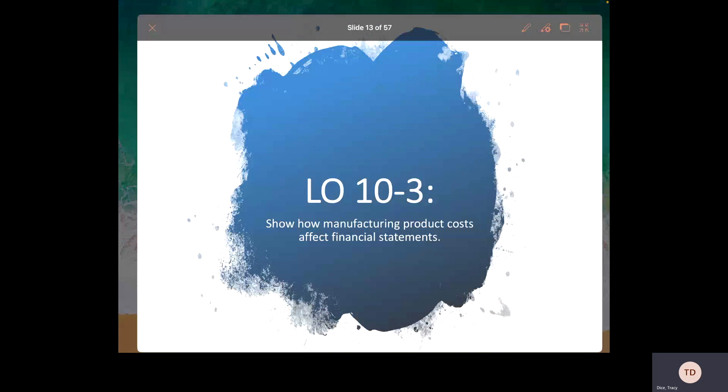Hello, everyone. This video is going to cover chapter 10, sections 3 through 5. Section 3, or objective 3, is all about manufacturing product costs and how they affect the financial statements.